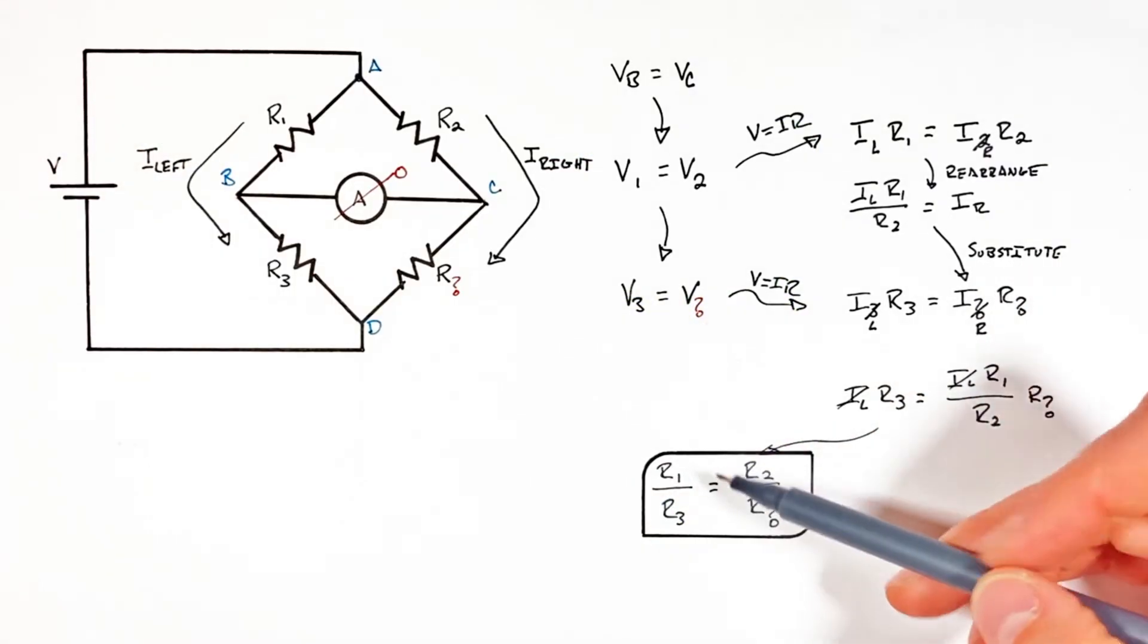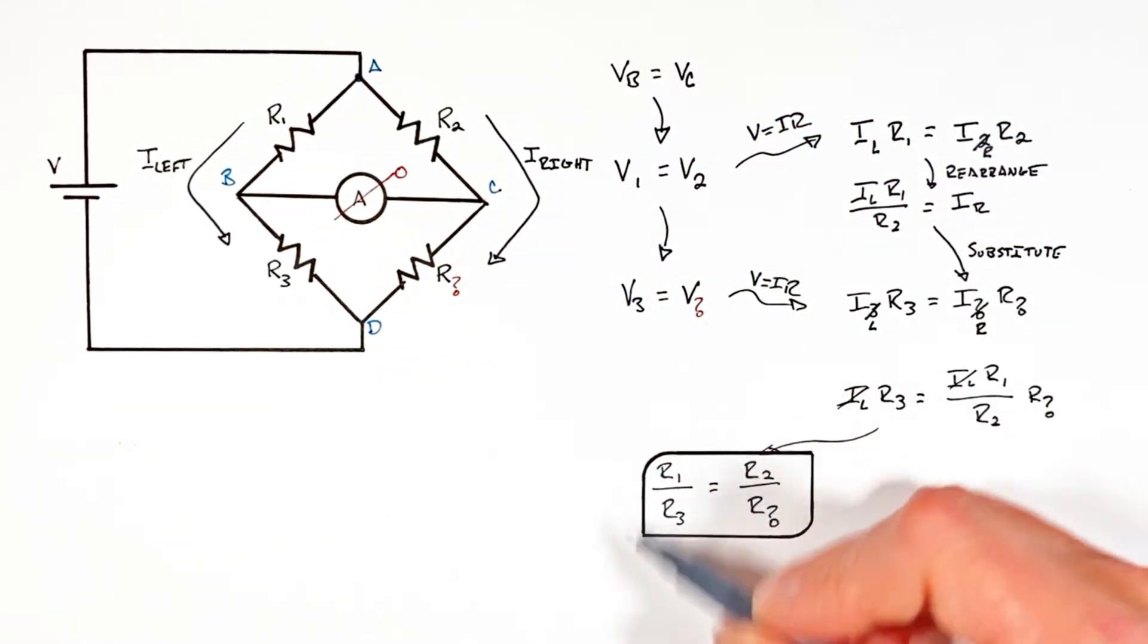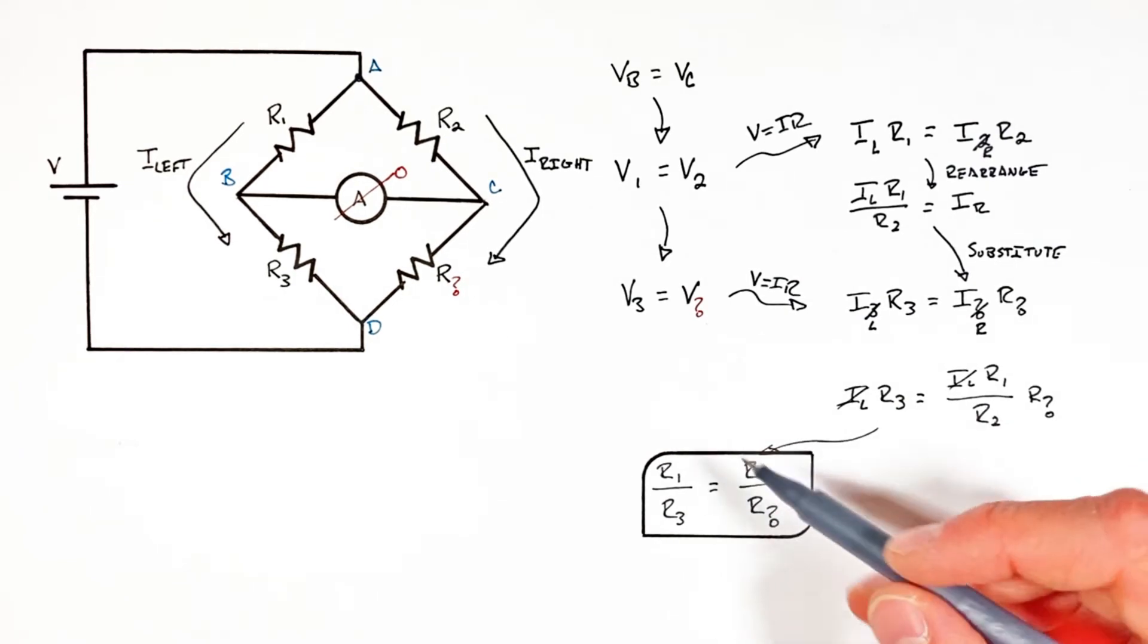The first way to do that is to relate the resistors on the left side to the resistors on the right, and this equality is specific to what we call a balanced Wheatstone bridge.